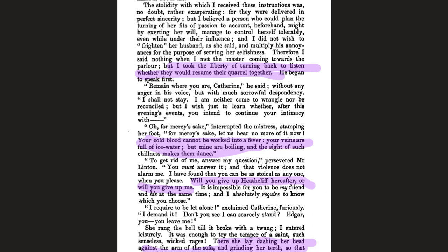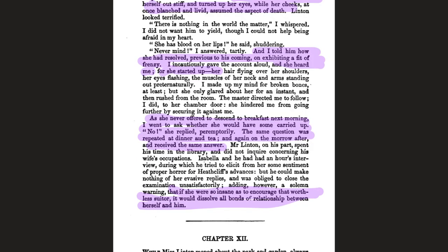Nellie fears violence from Catherine, who secures her chamber door against her. Catherine refuses breakfast the next morning, then dinner, then tea — and the same on the following days. Edgar reiterates his ultimatum as a solemn warning. Just as Heathcliff arrived at Wuthering Heights as a child and caused jealousy in Hindley over his father's affections, here in this second phase Heathcliff causes disruption in Catherine's marriage — though really, it's Catherine who has generated the whole situation.